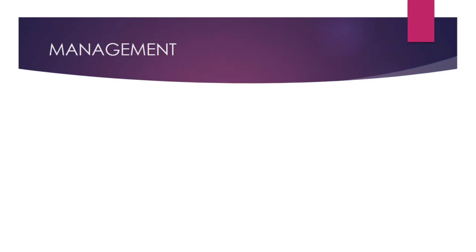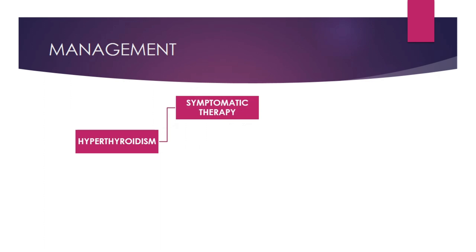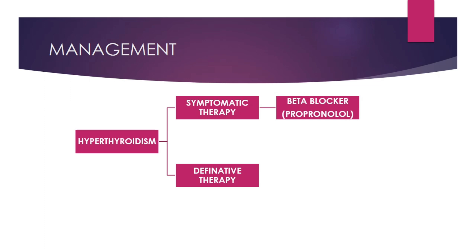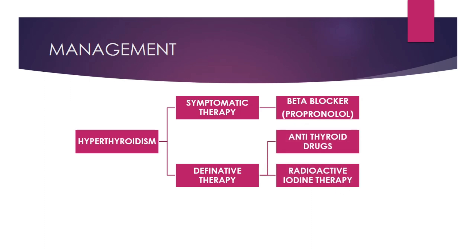How to manage a case of hyperthyroidism: we can give symptomatic therapy and definitive therapy. The symptomatic therapy includes a beta blocker — the most commonly used is propranolol. The definitive therapy includes antithyroid drugs, radioactive iodine ablation therapy, and thyroid surgery — either total or partial thyroidectomy.